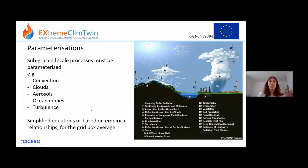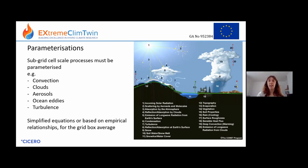Sometimes we're not totally sure what the value of a parameter should be, so we can tune the climate model to alter these values to try and get it to simulate the most realistic climate possible. This is a visual representation: you have a big convective cumulonimbus cloud which has to be parameterised, and then you have aerosols interacting with the sunlight, and that's parameterised too.